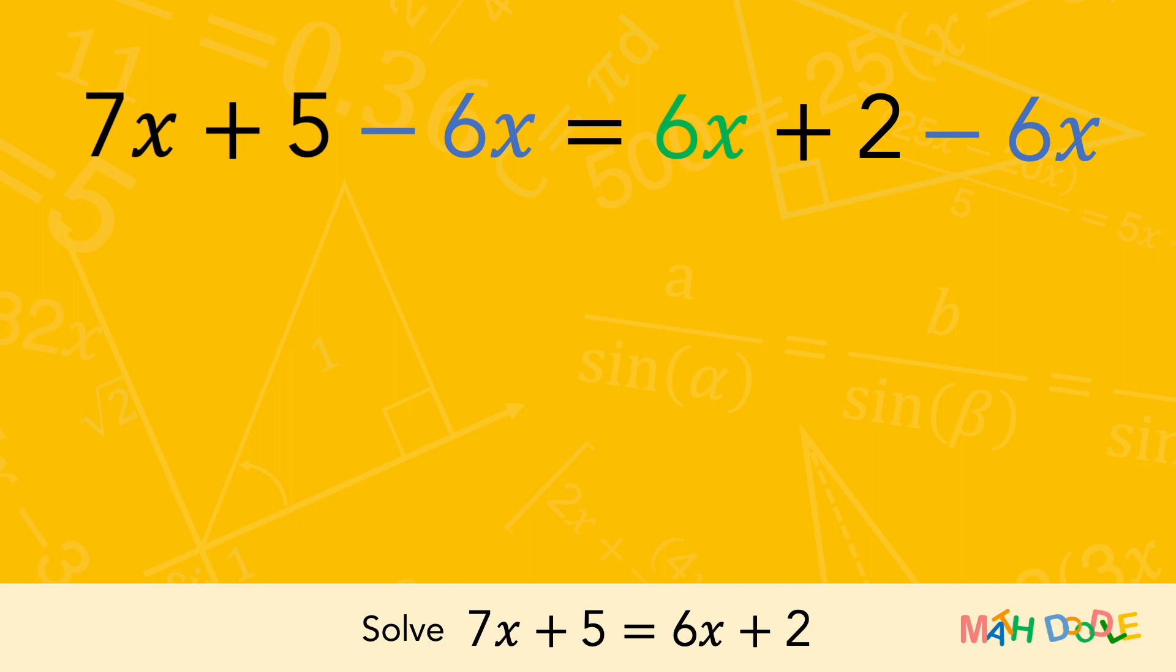After subtracting 6x, the left side of the equation is simplified to x plus 5. The right side of the equation can be simplified to 2. We now have a new equation: x plus 5 equals 2.